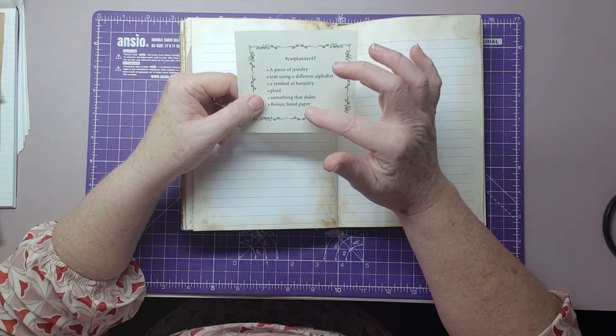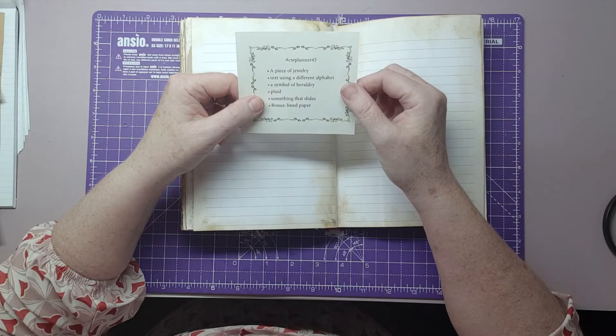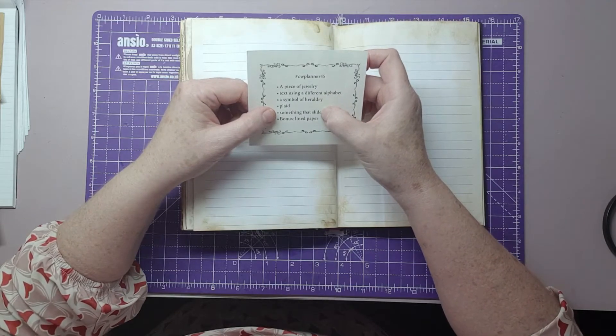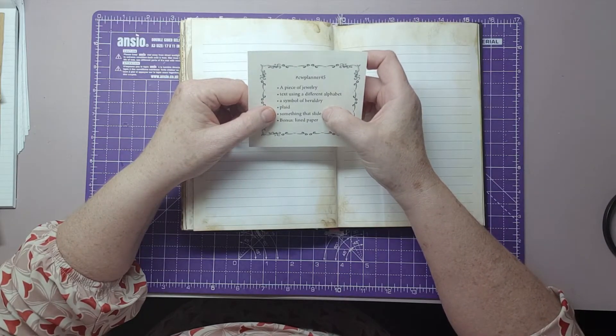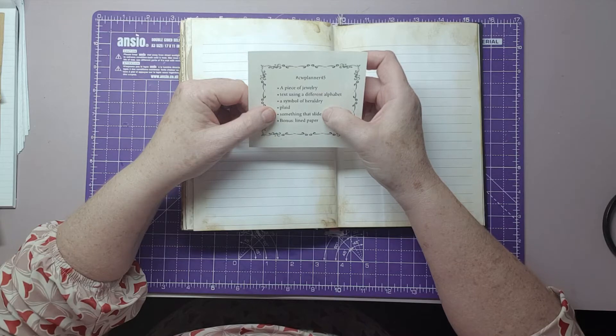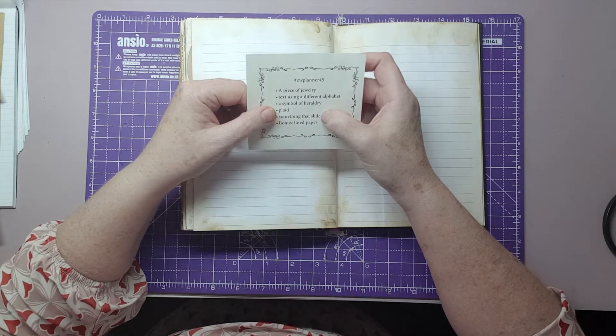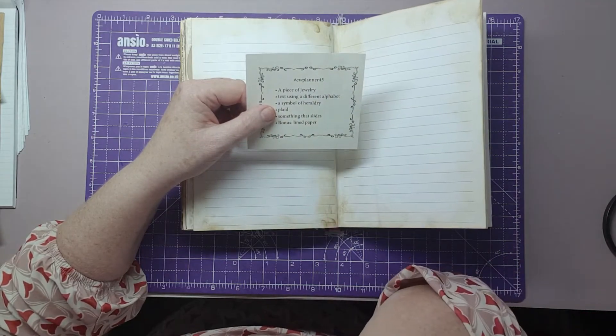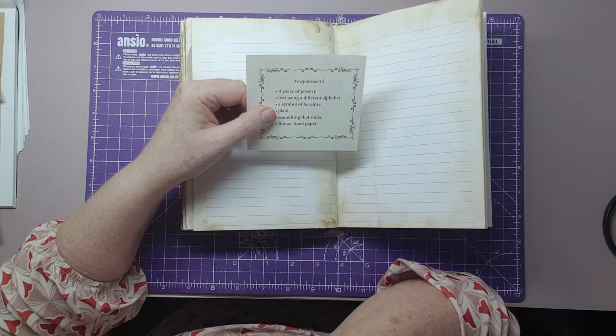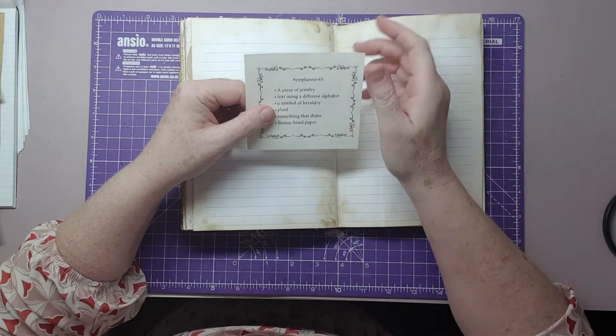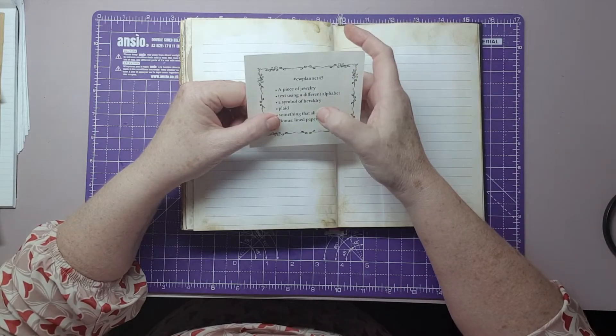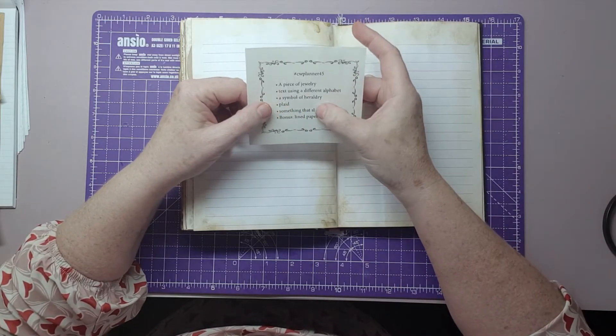Today I'm swapping the bonus for something that slides because I haven't got anything that I could think of, and I don't want to go onto Google and have to print something off the internet. I like to try and find something in my stash, but I couldn't find anything. So I'm going to use lined paper and take out the something that slides.